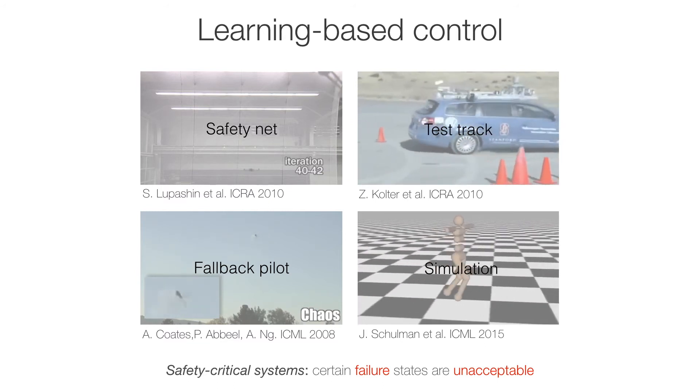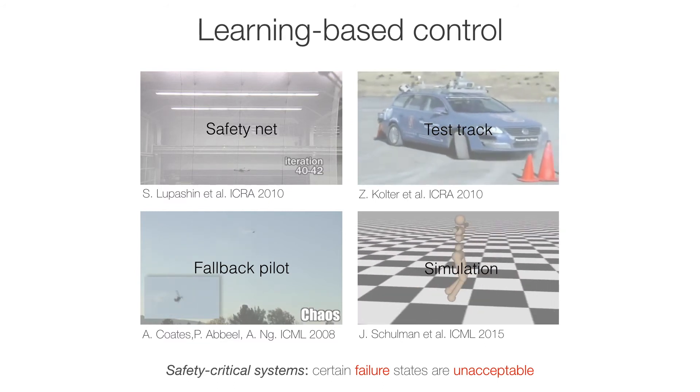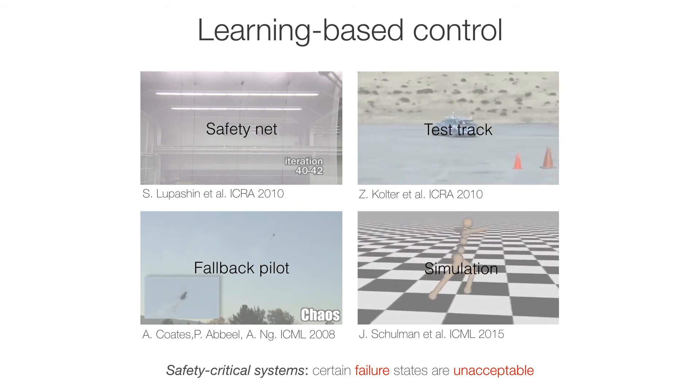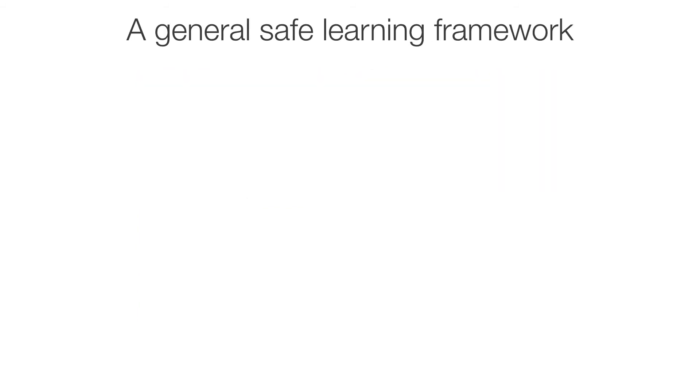Similarly, pre-training and simulation does not ensure the safety of the real system. We propose a general safety framework that draws on control theory and Bayesian machine learning and can work in conjunction with an arbitrary learning algorithm.